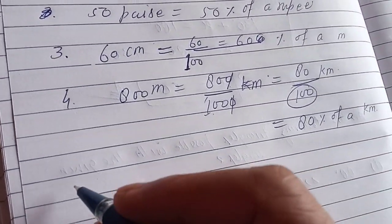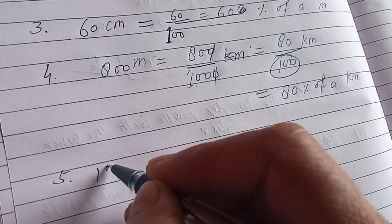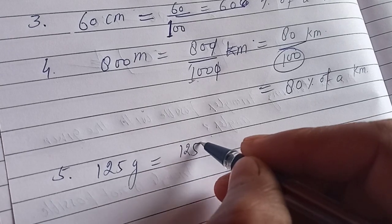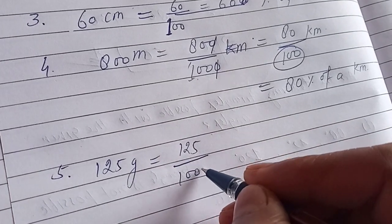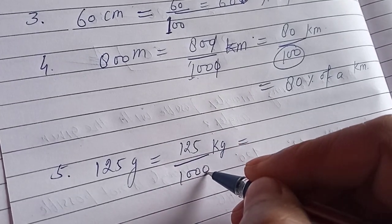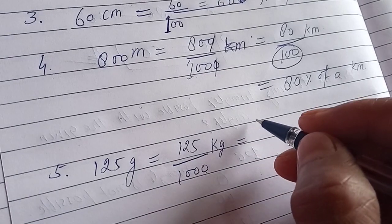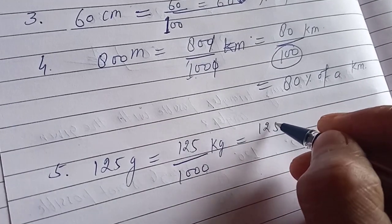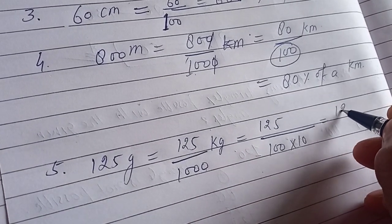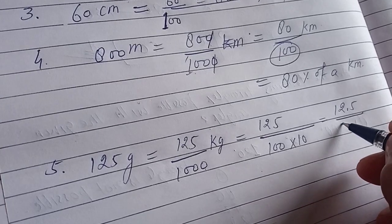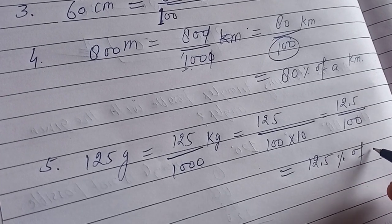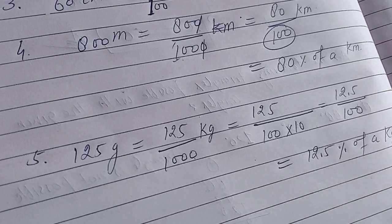Fifth diya hai: 125 gram. To 125 gram ka matlab 125 upon 1000 kg hota hai. Yahan 1000 ko 100 into 10 likh sakte hain. 10 se divide karne par 12.5 upon 100 aa jaata hai. So 125 gram = 12.5 percent of a kilogram.